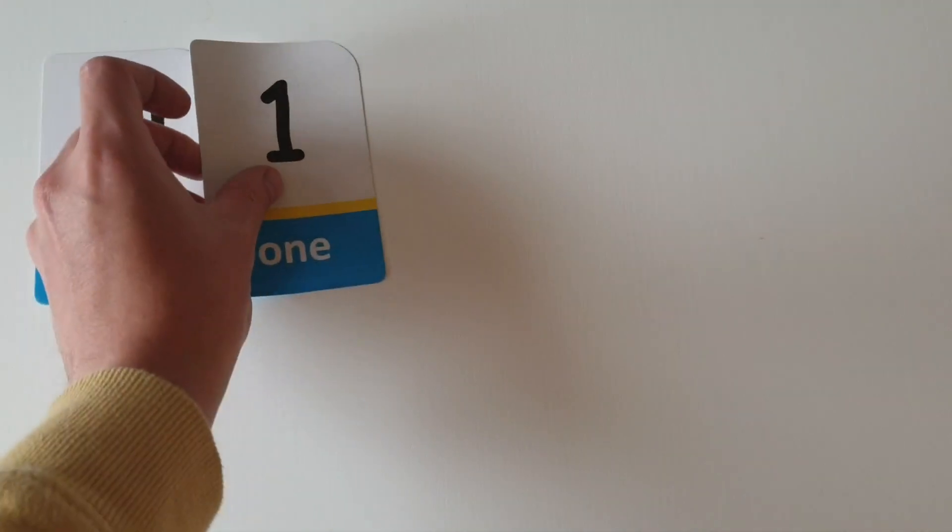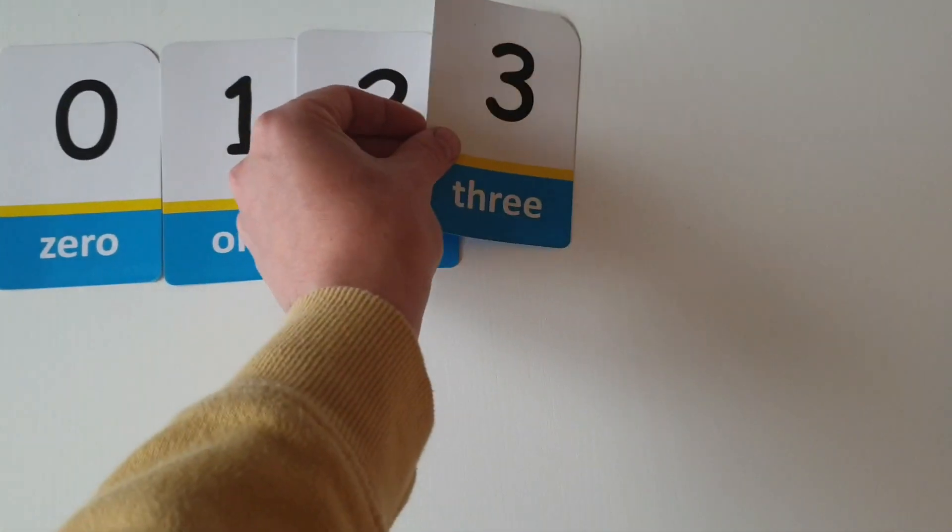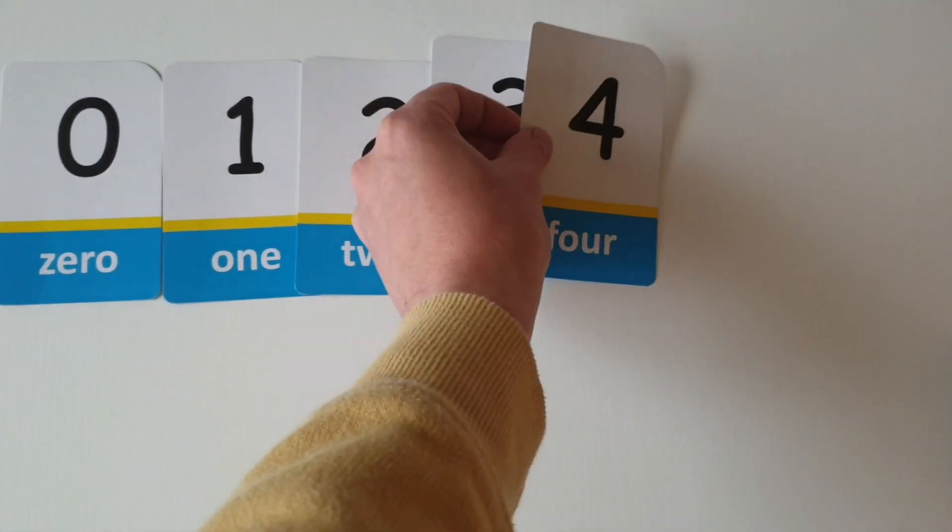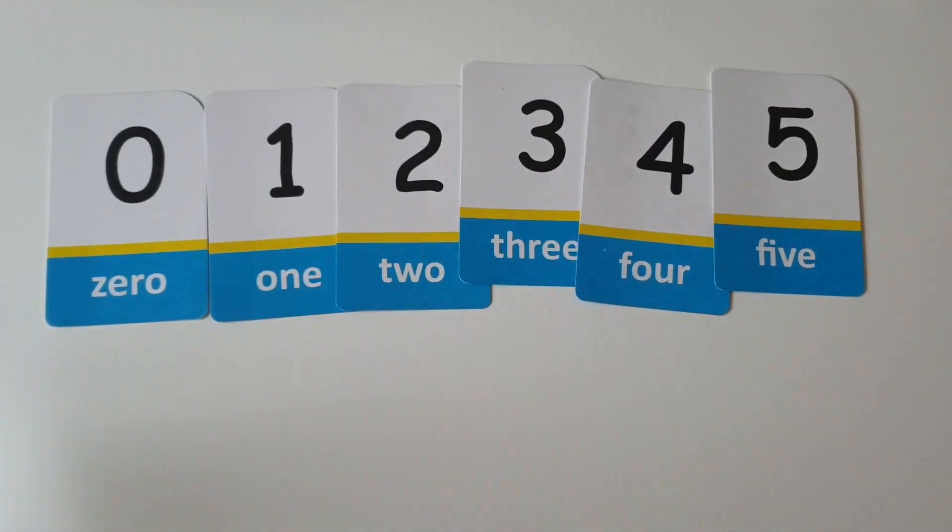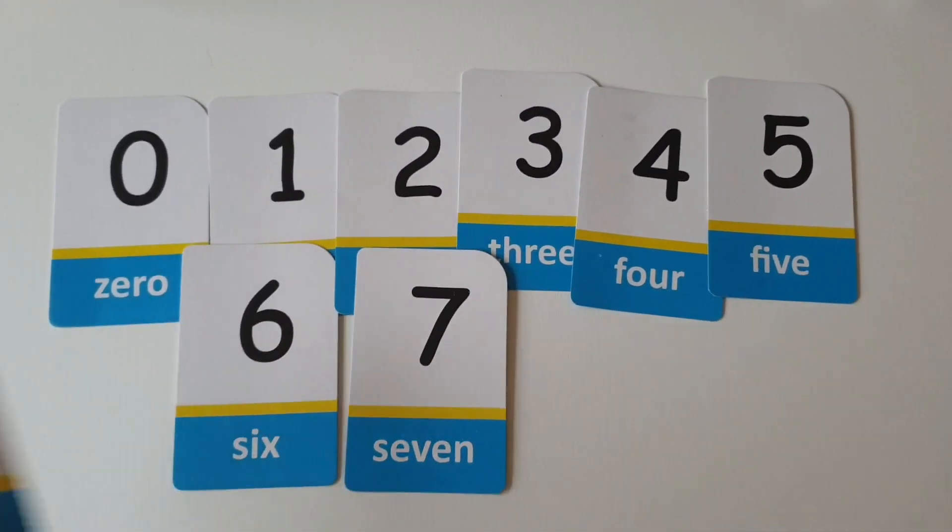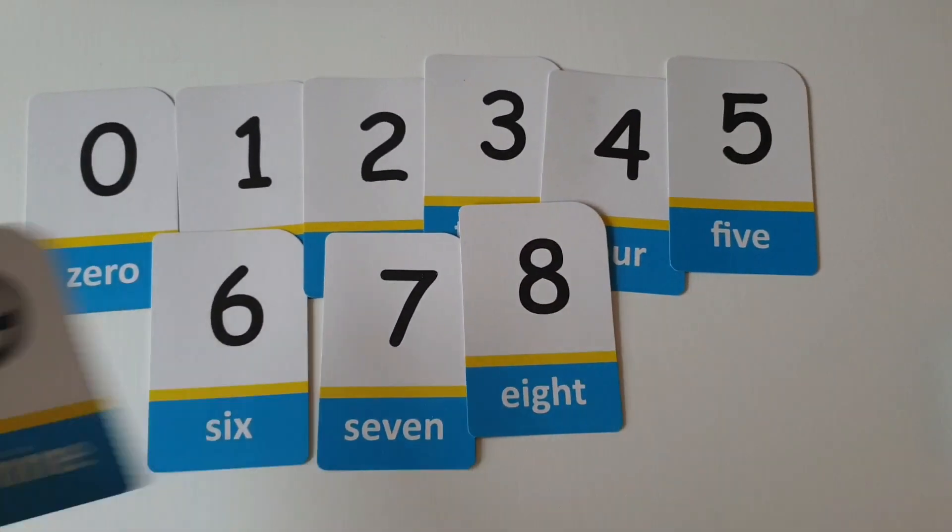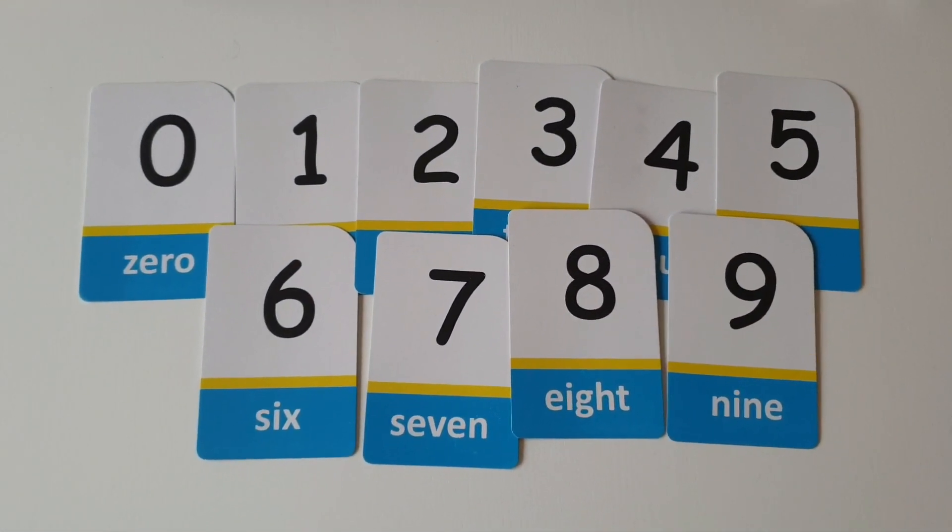Now children I'm going to start off with my number cards. Zero, one, two, three, four, five, six, seven, eight, and nine. And these are going to help me generate my two-digit numbers.